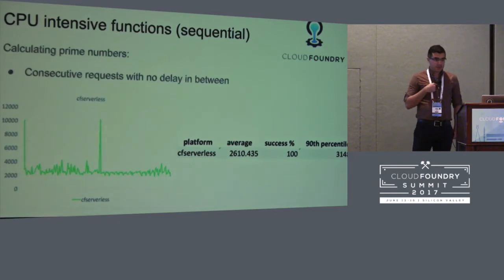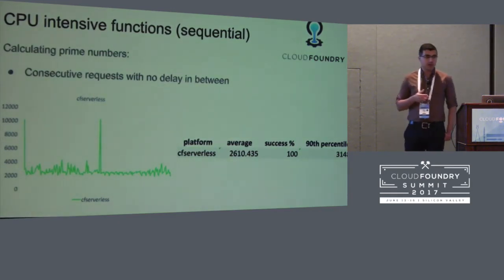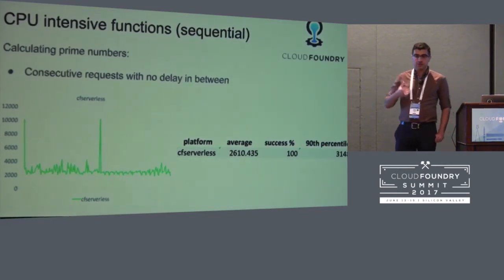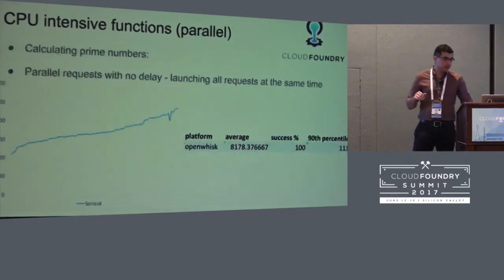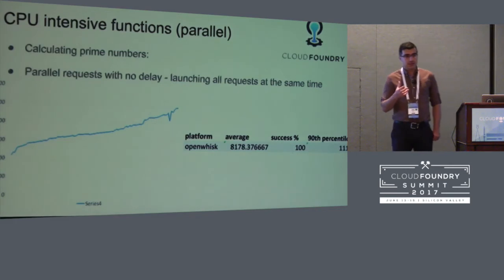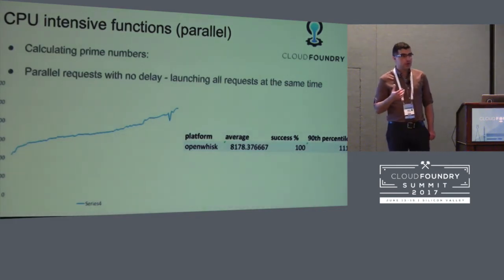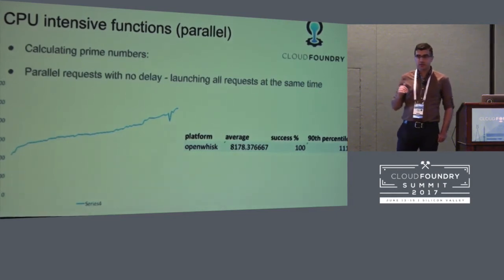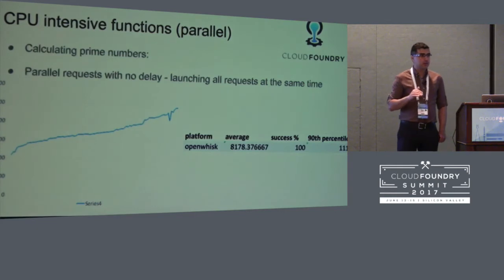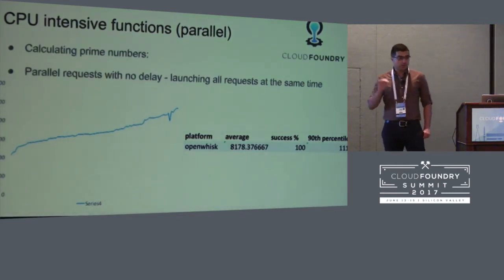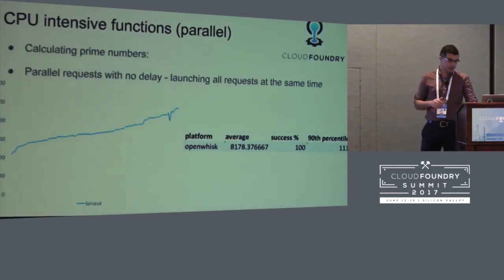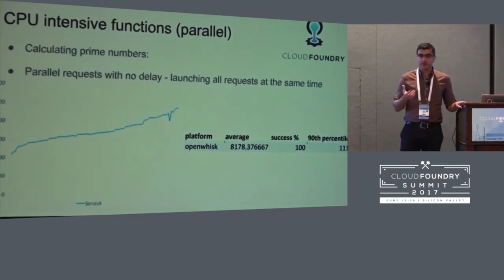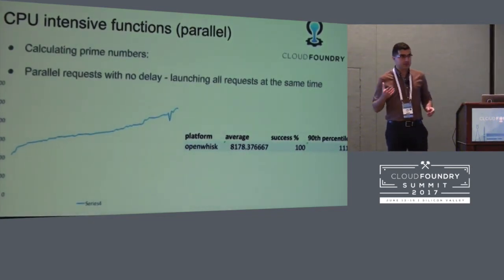Another container would probably be launched, respond to a few requests, then go down. For something heavily memory-intensive, Azure was not able to cope and scale well when there were a good number of parallel requests. For CPU-intensive functions — finding primes — this is the result from CF Serverless in sequential fashion: same pattern as echo, the first request takes longer because of container creation, follow-up requests are flat. In the parallel case with OpenWhisk and Lambda, they did a much better job compared to Azure: there was a slight increase in response time but every single request came back successfully, with no steep slope.